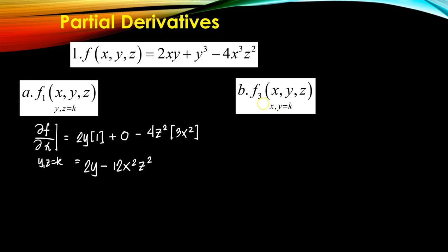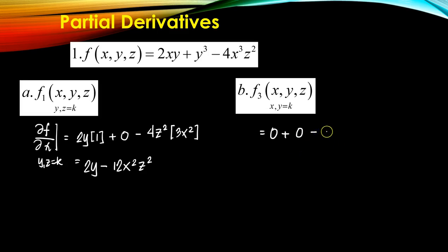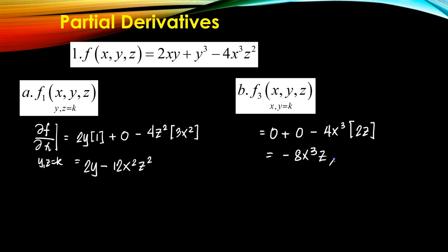In part B, f₃ means the partial derivative with respect to the third variable, which is z. Since x and y are both constants, the first term 2xy becomes 0, and y³ also becomes 0 since it's purely in y. Then 4x³ is a constant, and the derivative of z² is 2z. So the answer is −8x³z.